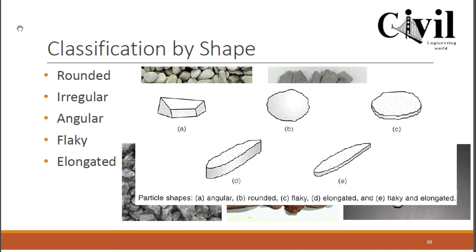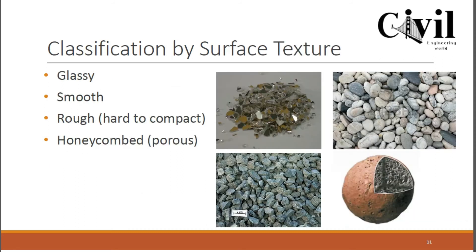Angular shape has different angles and sides. Flaky shape is where the length and width of the aggregate are almost the same. Elongated shape is where one dimension is greater than the other. These are the different classifications of aggregates on the basis of their shape.